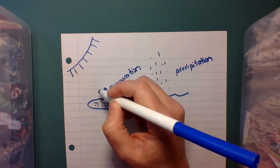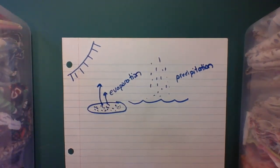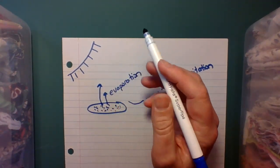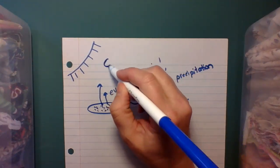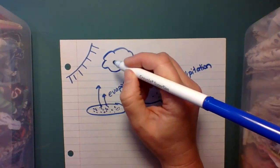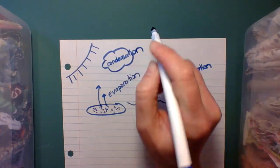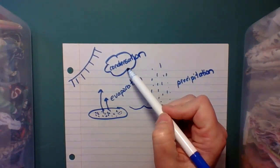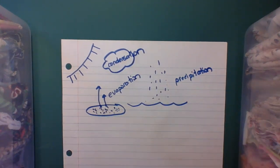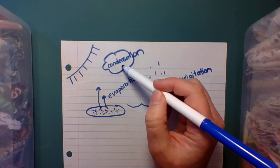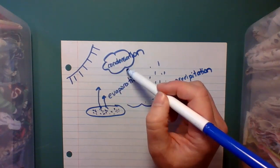So when this happens, the liquid, the water, turns into a gas. And we call that water vapor. And then up here in the atmosphere, it becomes part of the atmosphere. And up here in the atmosphere, they can turn into clouds. And that's called condensation.